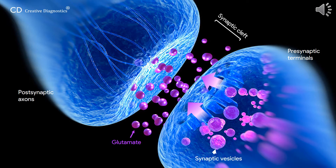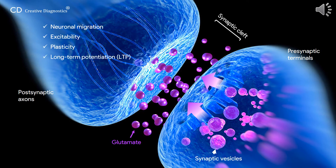Once released, glutamate acts on postsynaptic glutamate receptors to regulate several neuronal functions, such as neuronal migration, excitability, plasticity, long-term potentiation and long-term depression.